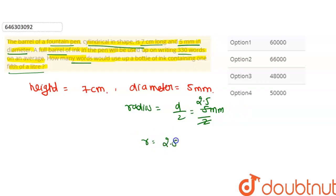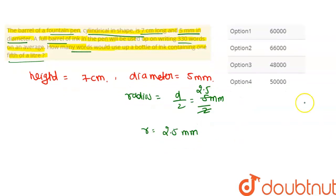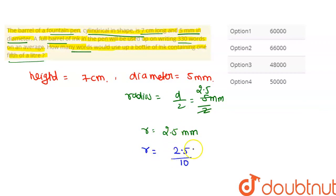The radius is 2.5 mm. But the height is in cm, so we need to convert mm to cm. To convert, we divide by 10: 2.5 divided by 10 gives 0.25 cm. So, the radius is 0.25 cm.